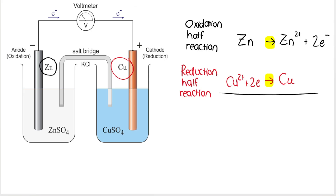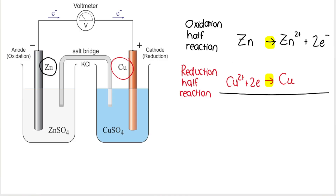To get the net cell reaction, we first check whether the electrons are balanced. I have two electrons in the oxidation half reaction and two electrons in the reduction half reaction, so they are the same. No need to balance, no need to multiply. Then I cancel the electrons — we can cancel them when they appear on either side of the arrow, specifically the right-hand side of one and the left-hand side of the other.